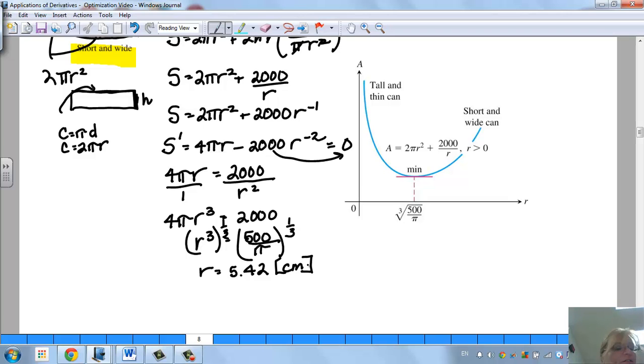So the radius of this can has to be 5.42 centimeters. So far that's what we have for our radius.